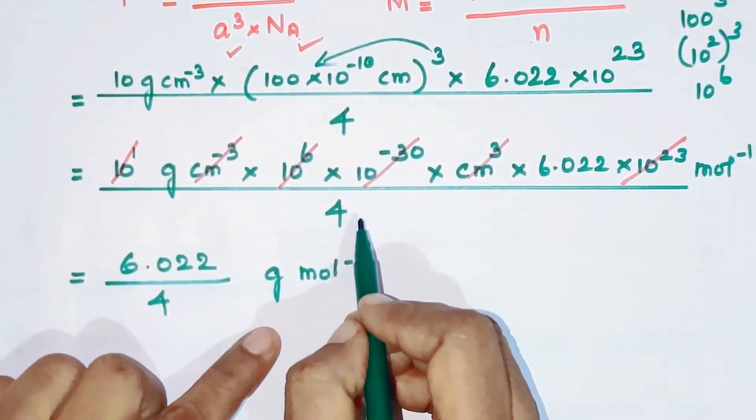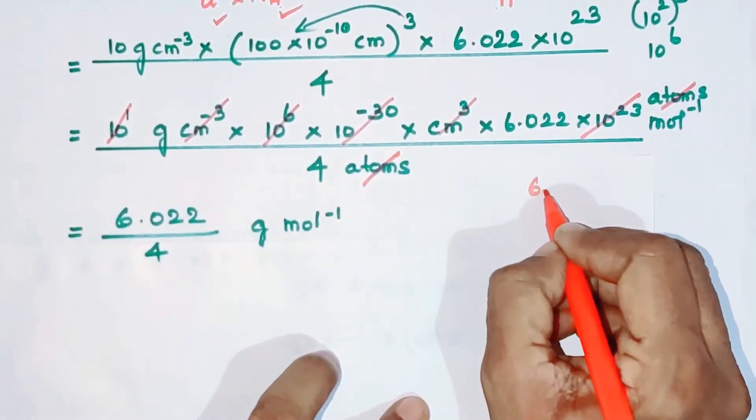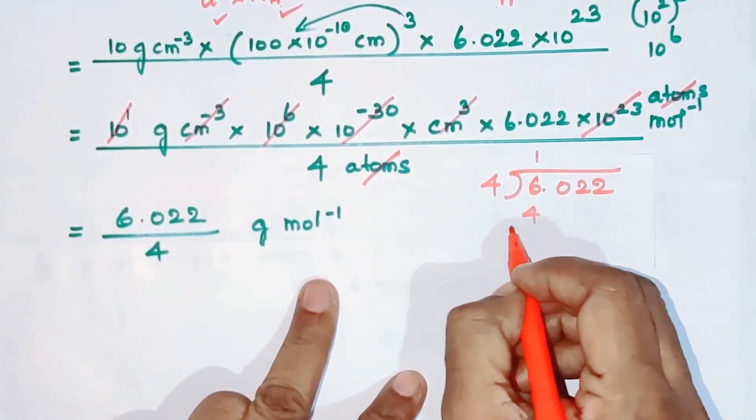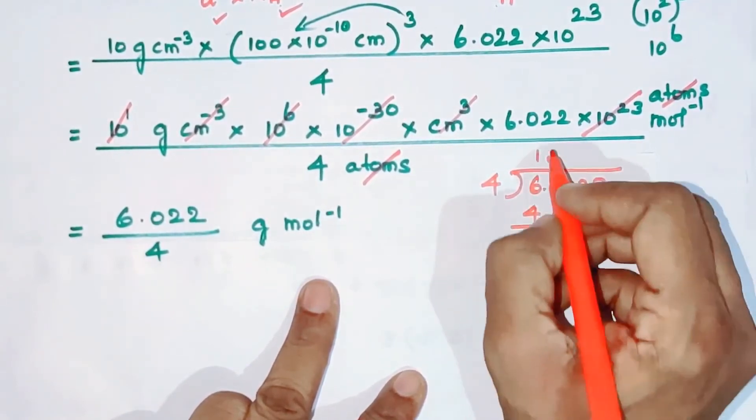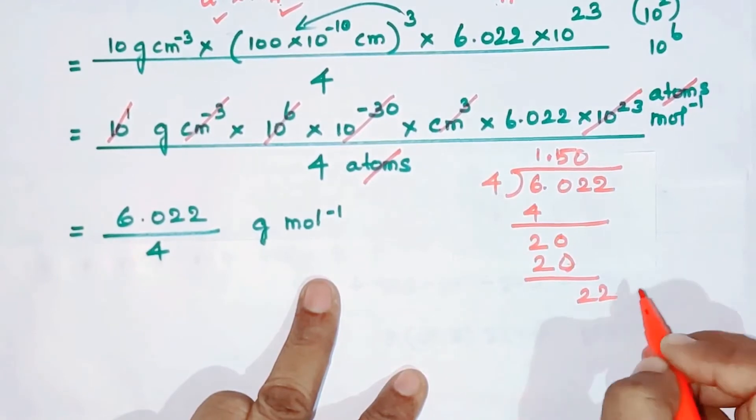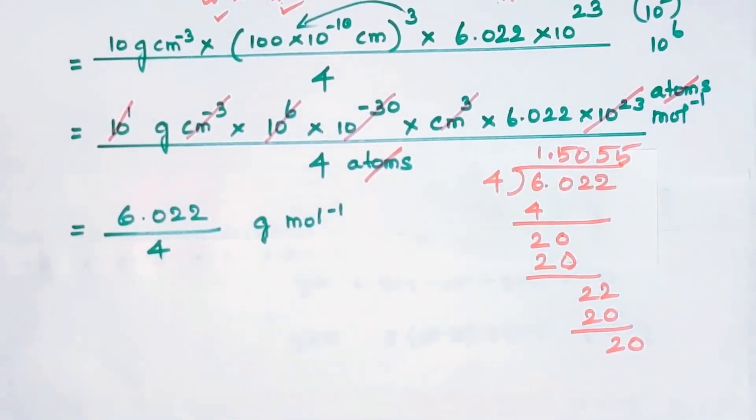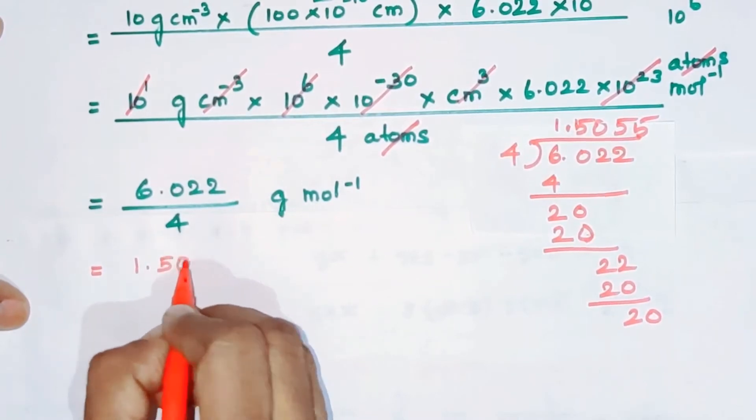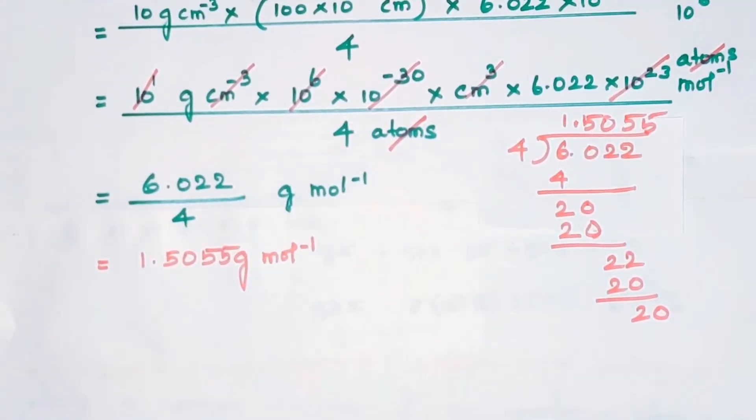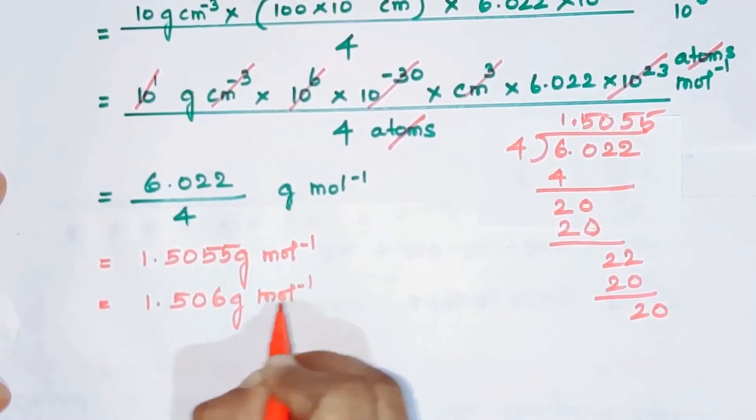This equals 6.022 divided by 4 gram mole minus 1. Dividing 6.022 by 4: 5 times 4 is 20, so this equals 1.506 gram per mole.